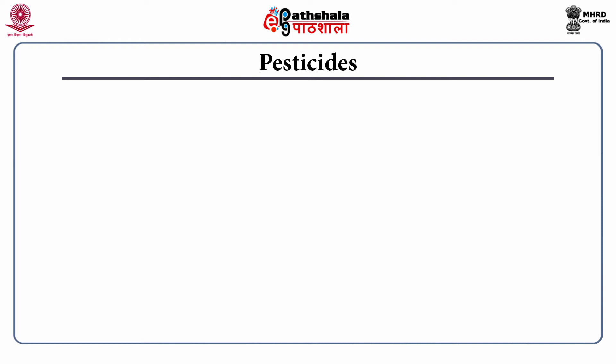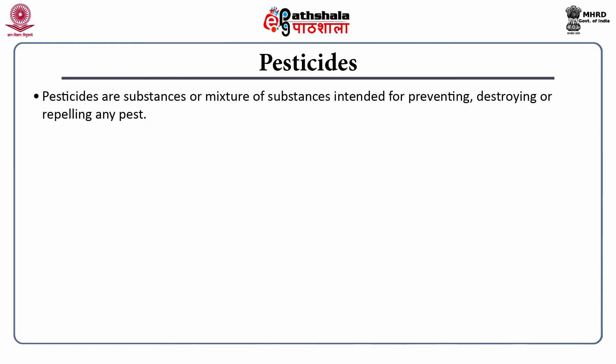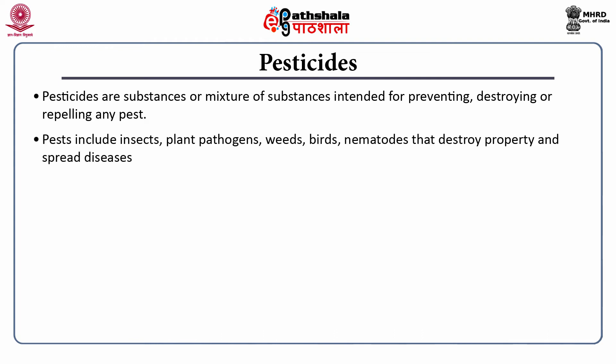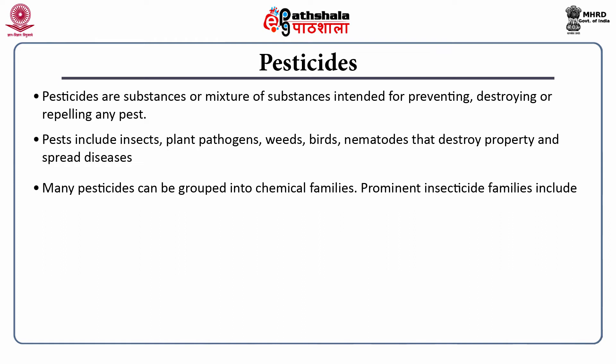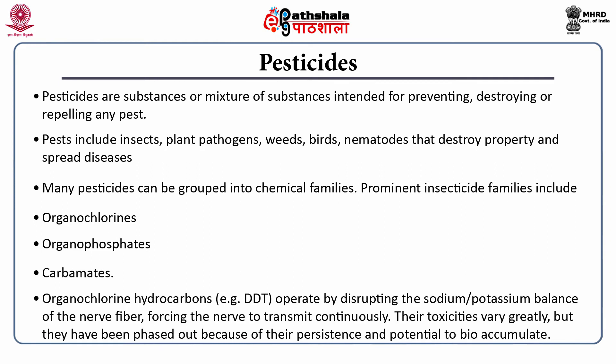Next, we will discuss pesticides. Pesticides are substances or mixtures intended for preventing, destroying, or repelling any pest. Pests include insects, plant pathogens, weeds, birds, and nematodes that destroy property and spread diseases. Many pesticides can be grouped into chemical families. The prominent insecticide families are organochlorines, organophosphates, and carbamates. Organochlorine hydrocarbons, such as the famous DDT, operate by disrupting the sodium-potassium balance of the nerve fiber, forcing the nerve to transmit continuously. Their toxicities vary greatly, but they have been phased out because of their persistence and potential to bioaccumulate.